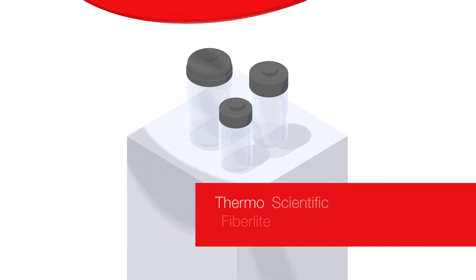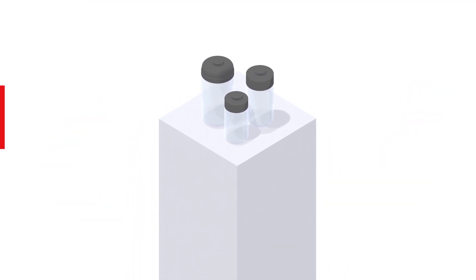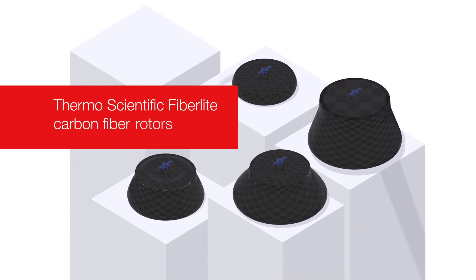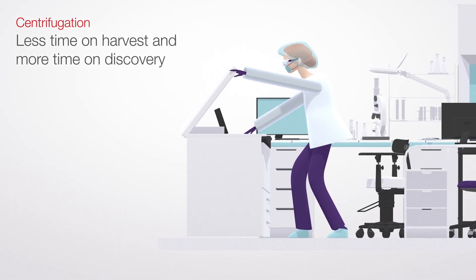Here, you can choose the best options for your application, including 1-liter bottles and unique to the industry FiberLite carbon fiber rotors. Setup and cleanup are quick, so you'll spend less time on harvest and more time on discovery.